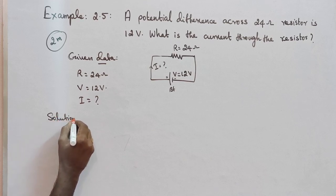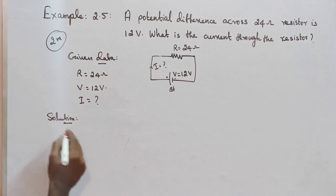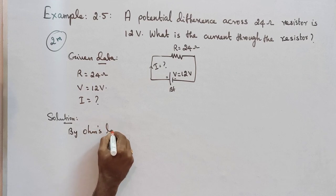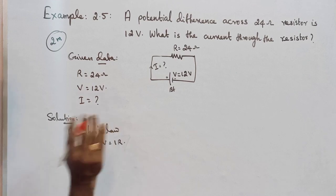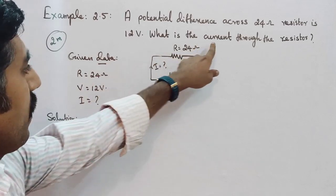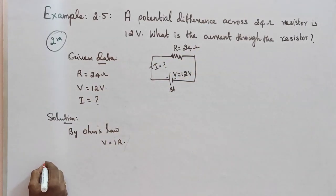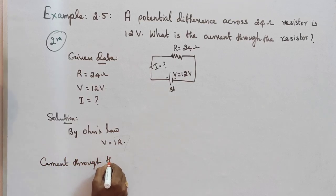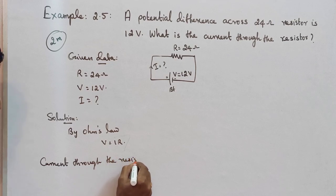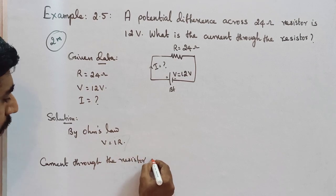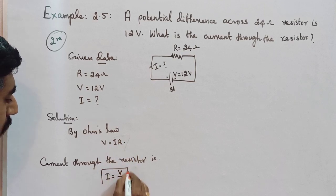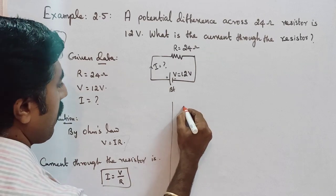Solution. By Ohms law we can write V is equal to IR is the formula. But we need I, current through the resistor. The formula is V is equal to IR, so I is equal to V by R. So next step, I is equal to...